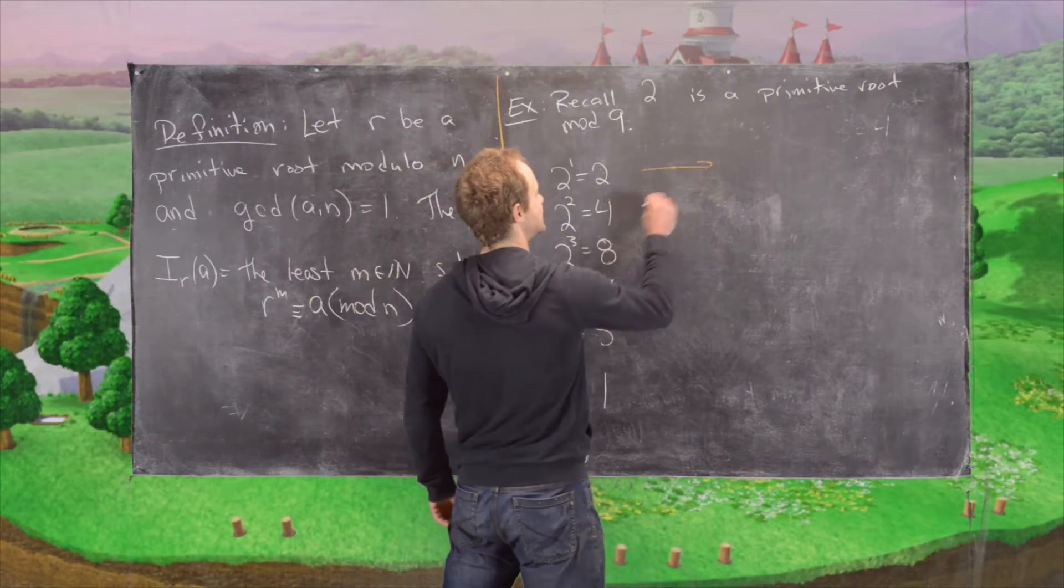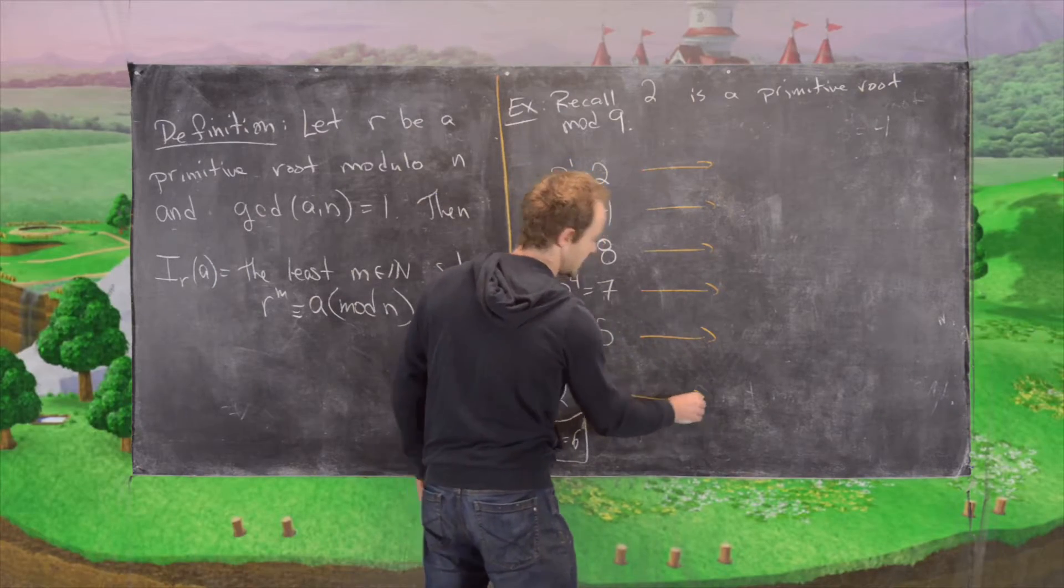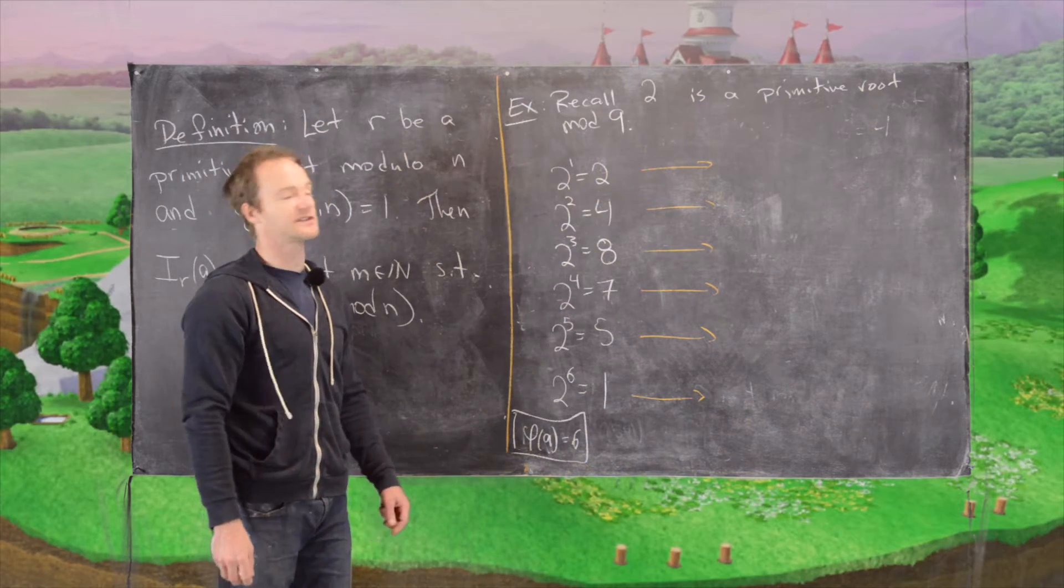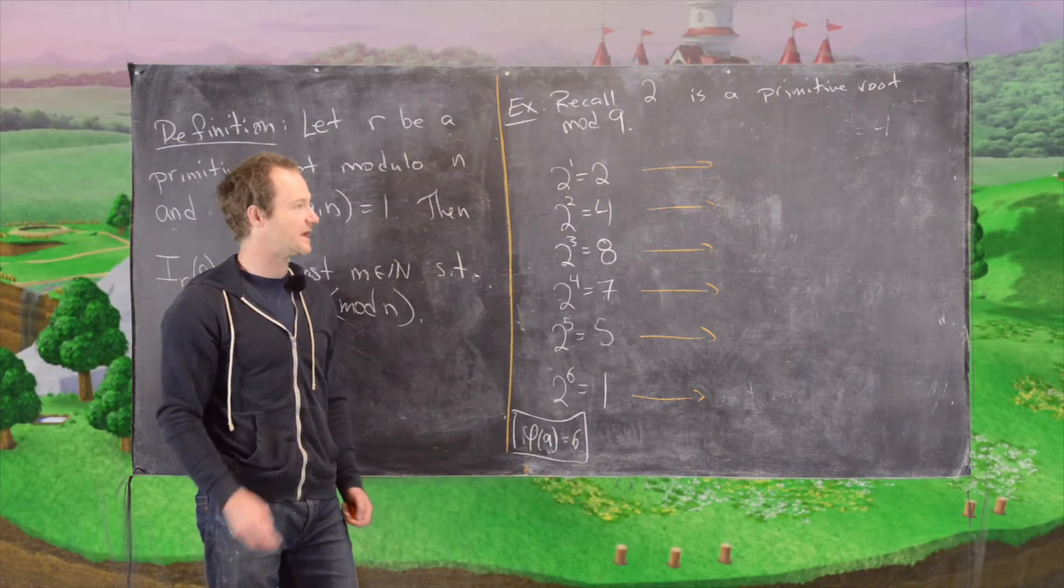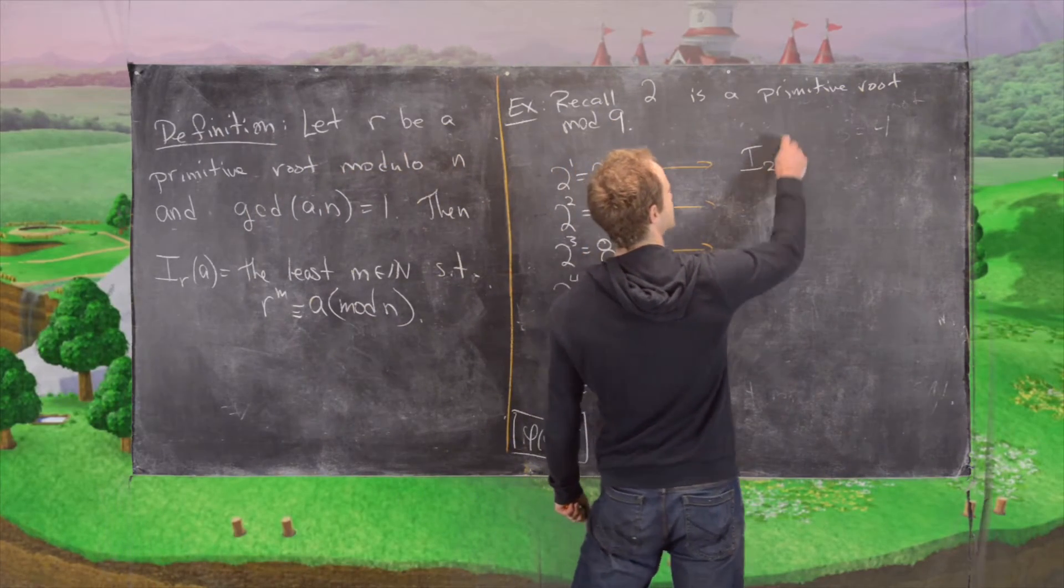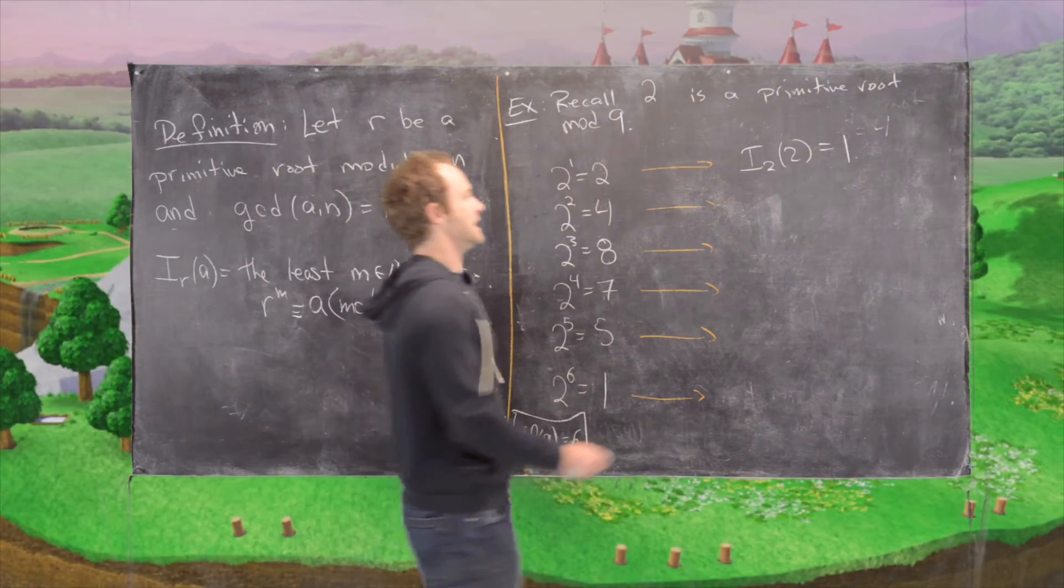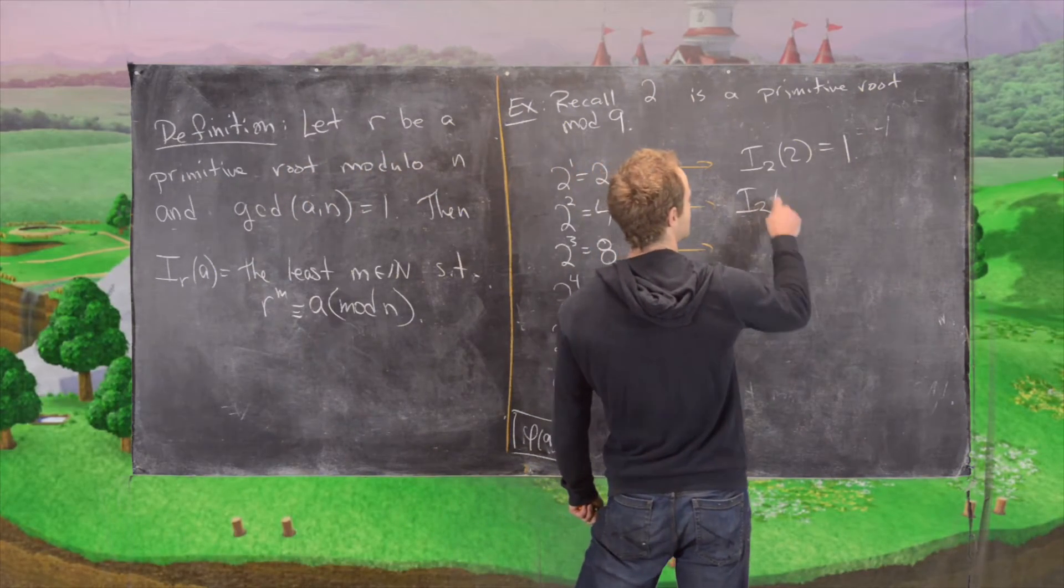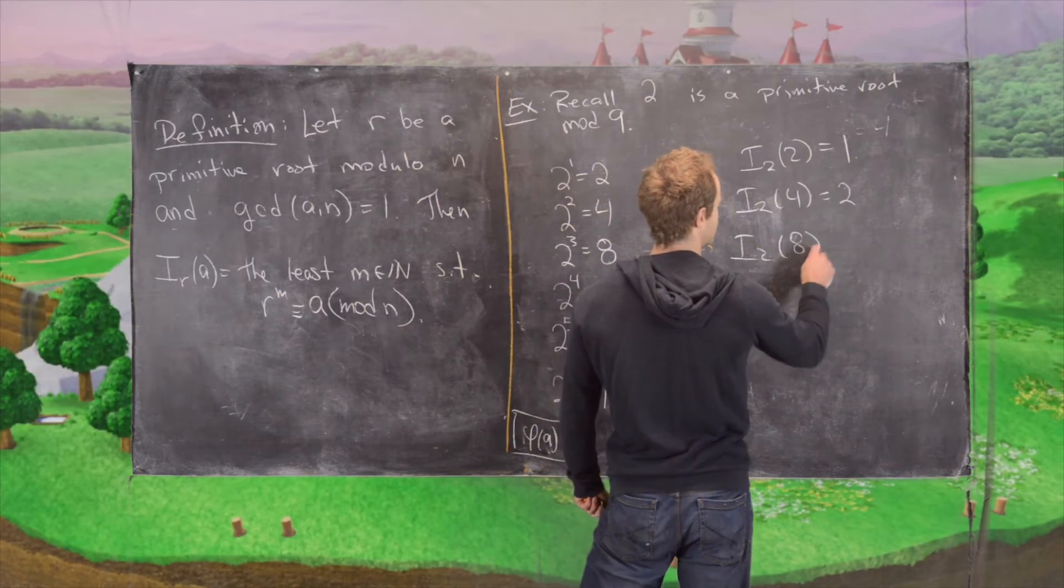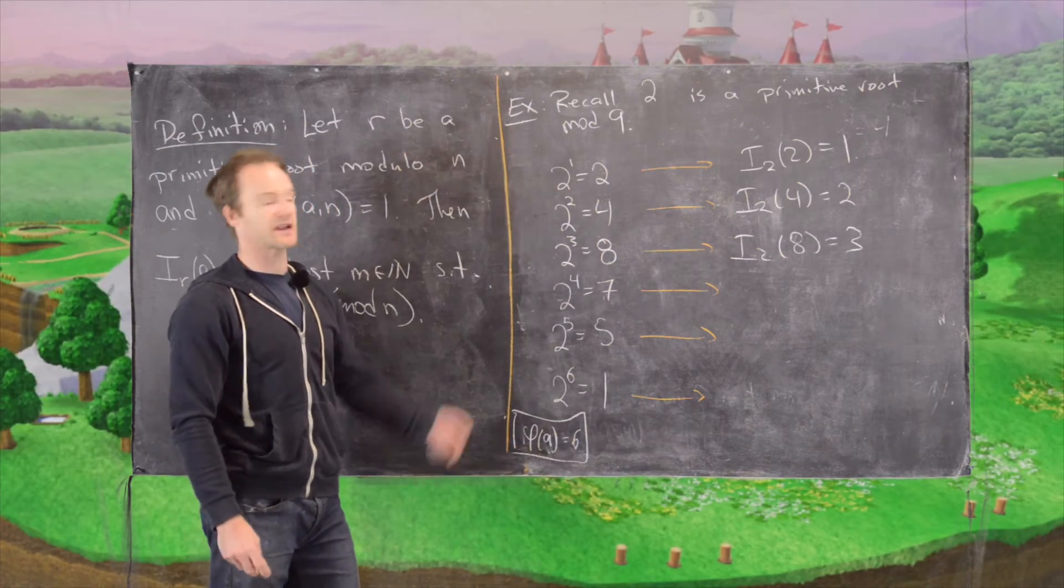So now what we want to do is rewrite each of these in their discrete logarithm form or their index form. So we're doing this discrete logarithm with a base of 2 or this index with respect to 2. So notice this tells us that the index 2 of 2 is 1. The index 2 of 4 is 2. The index 2 of 8 is 3.